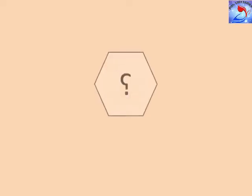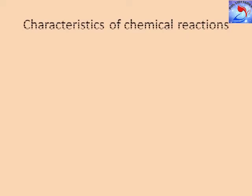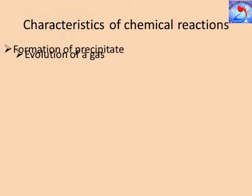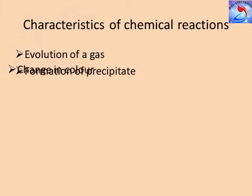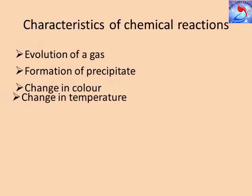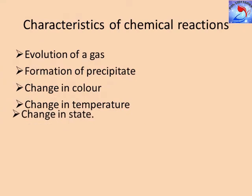An important question arises: how do we know that a chemical reaction has taken place? This will become clear from the following discussion on the characteristics of chemical reactions. The characteristics of chemical reactions are: evolution of a gas, formation of a precipitate, change in color, change in temperature, and change in state.